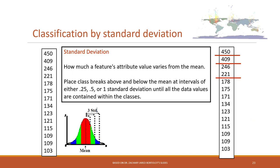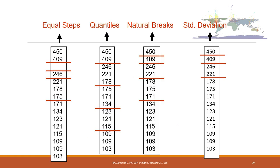The last data classification method is standard deviation. We calculate the mean value, and then around that mean we classify data based on one standard deviation, half a standard deviation, or other orders of standard deviation. So the first boundary is the mean, then mean plus one standard deviation, then plus two standard deviations, and so on.